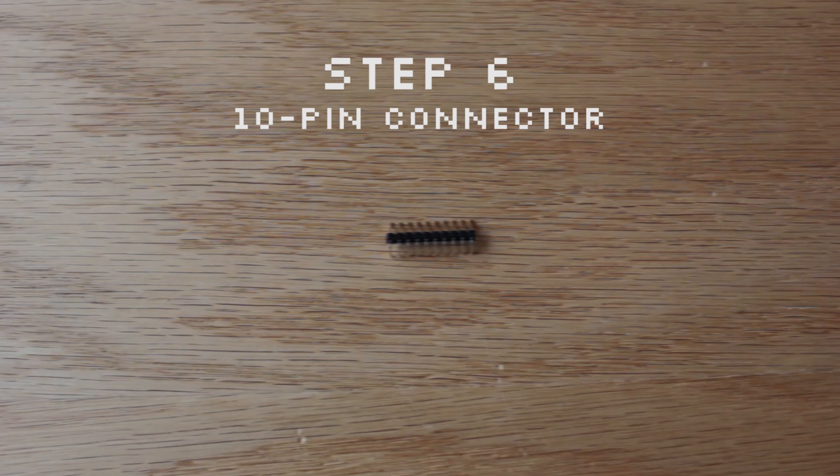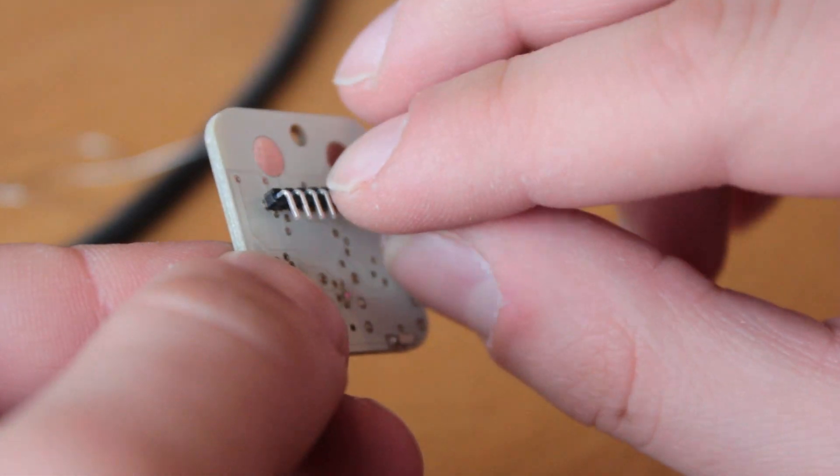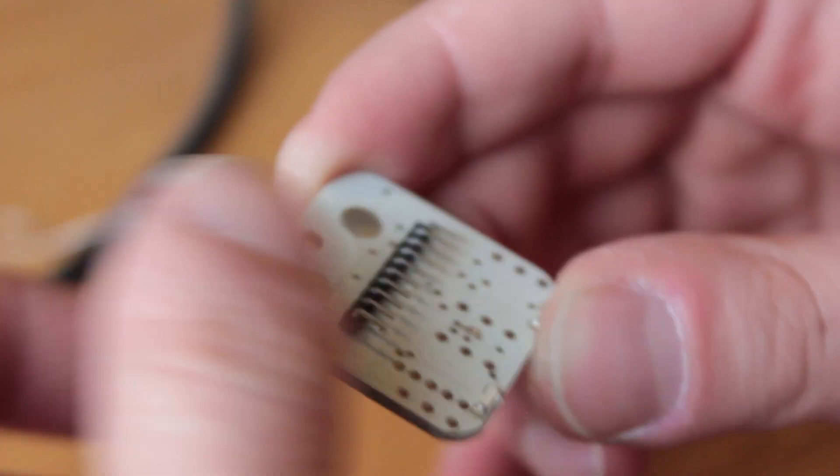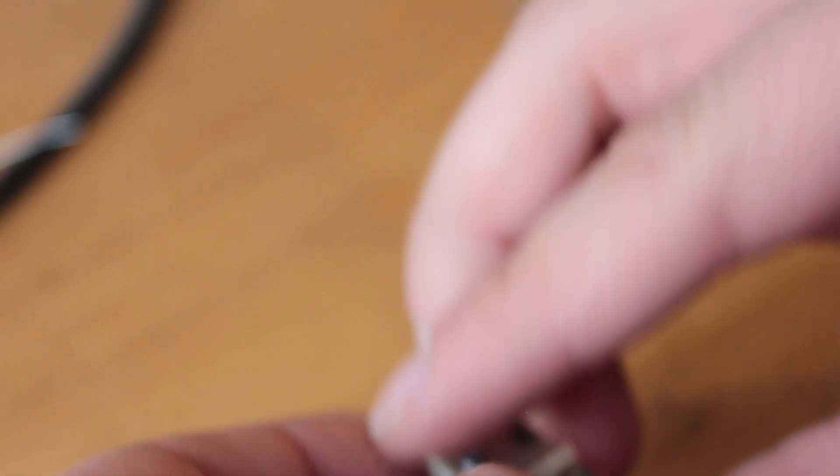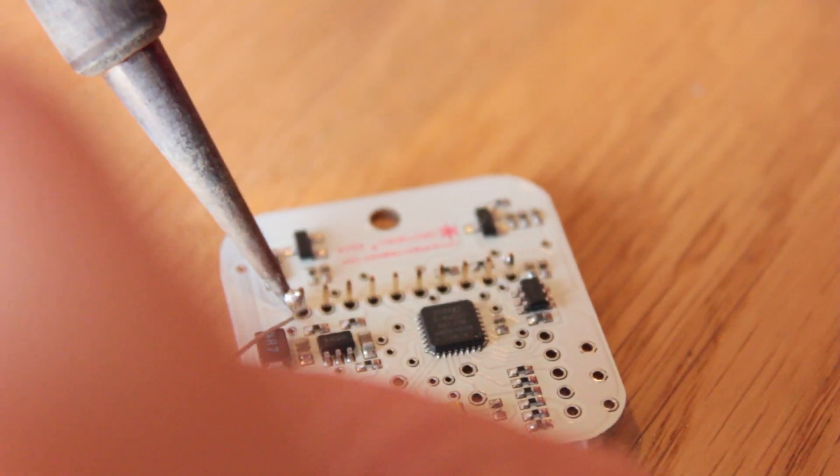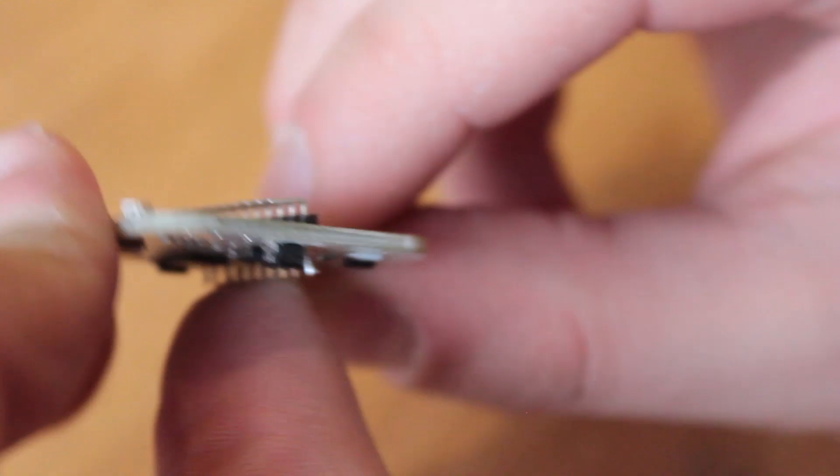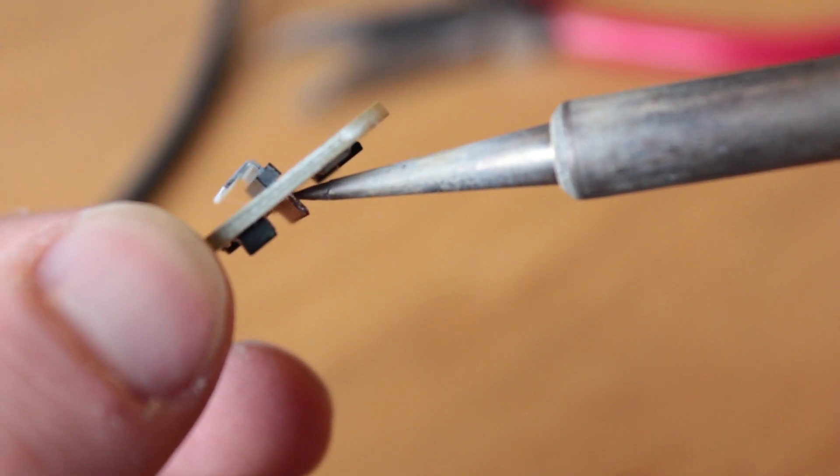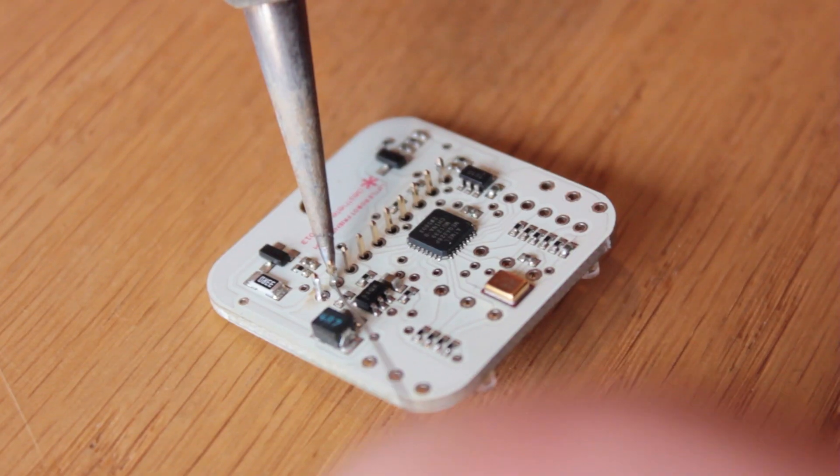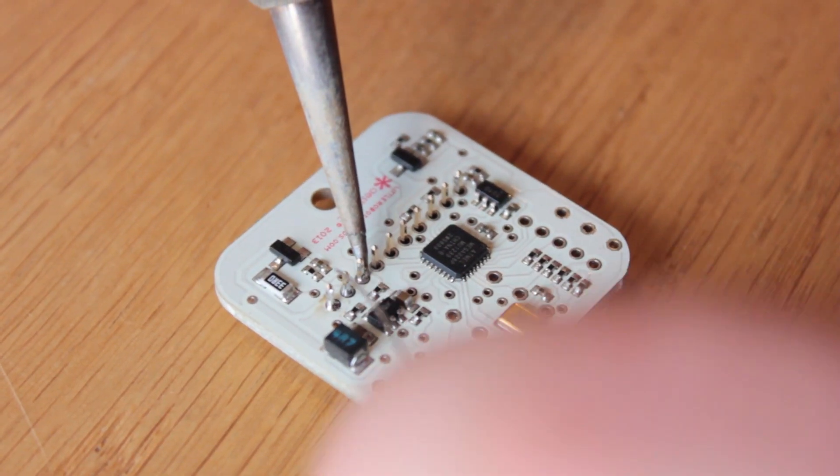So let's start with step six, the 10-pin connector. From the top, insert the straight prongs. The bent prongs should be pointing towards where the 5-pin and resistors will go. Now flip it over and solder one of the points first. We're doing one first to make sure the connector is sitting flat and straight. If it's not, melt up the solder and nudge it back into place. Now solder the rest of the connections from the bottom.